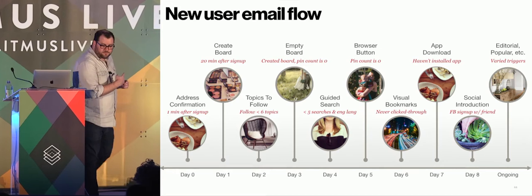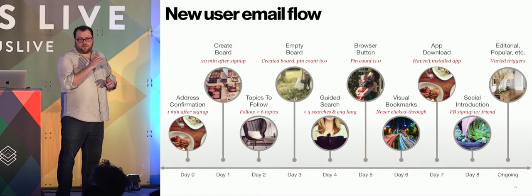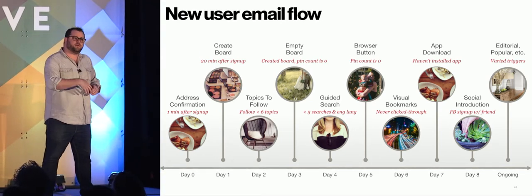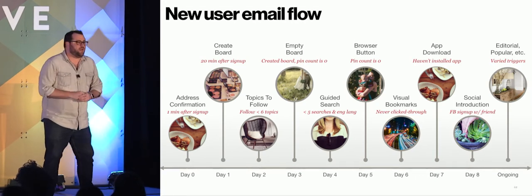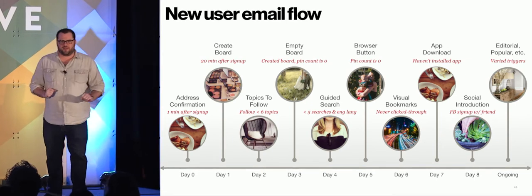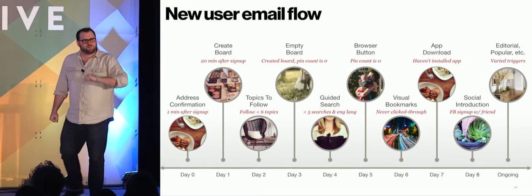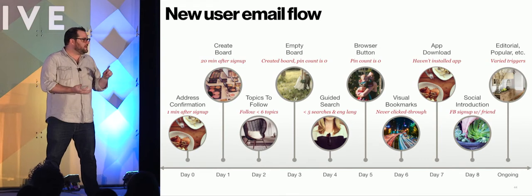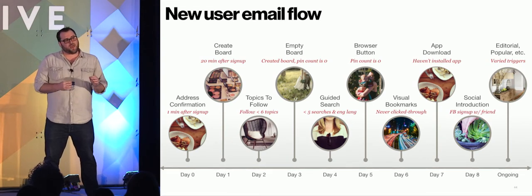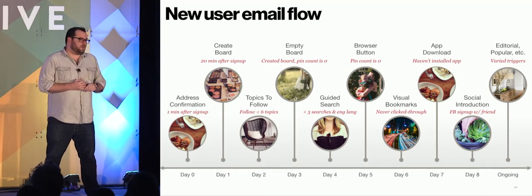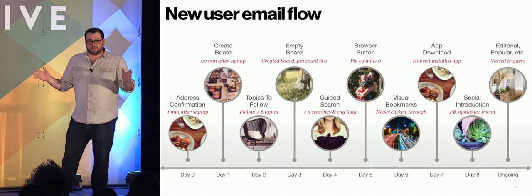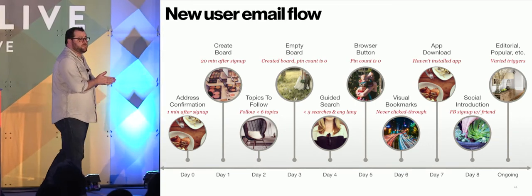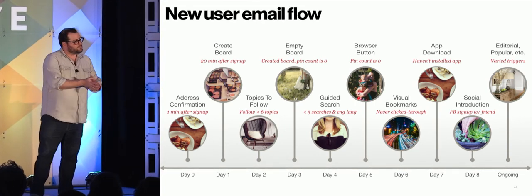Going back to that new user email flow — for emails like the day-three email sent to someone who created a board but hadn't saved any pins, it had a 50% click-through rate and half of those people would save their first pin. But when we did a holdout we found it had no impact on retention 28 days later. So we scrapped this series of emails and instead put that content first — we showed you the value of Pinterest rather than sending an email that told you about the value of Pinterest.